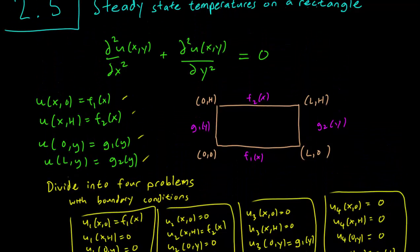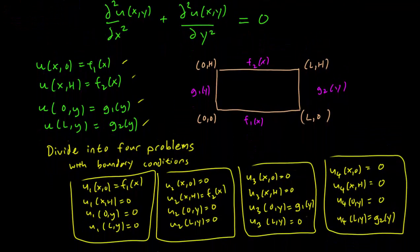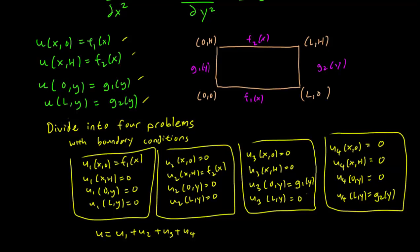And since the Laplace equation is a linear homogeneous equation, we can just add four solutions to it, and it will still be a solution, and it will be a solution with the correct boundary conditions. And this is how we simplify the problem by dividing it into four.